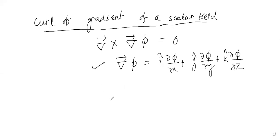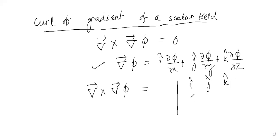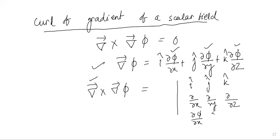To find del × (∇φ), write it as a determinant with rows: (î, ĵ, k̂), (∂/∂x, ∂/∂y, ∂/∂z), and (∂φ/∂x, ∂φ/∂y, ∂φ/∂z). Expanding the determinant, you get zero. So the curl of the gradient of a scalar field is always zero.